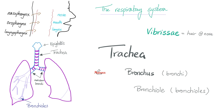Each bronchus will give you bronchioles. The bronchioles proximally are known as terminal bronchioles, and then when you go deeper, they become respiratory bronchioles. So let's do it again: nose, pharynx, larynx, trachea, bronchi, bronchioles, alveolar ducts, and then alveoli.